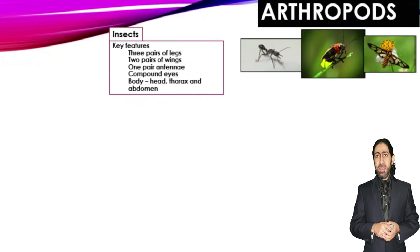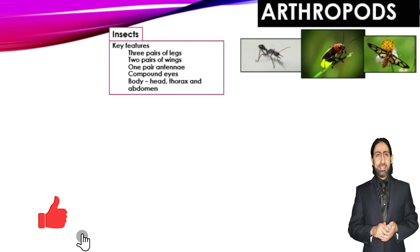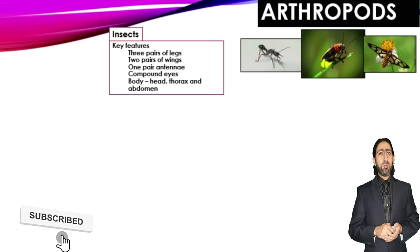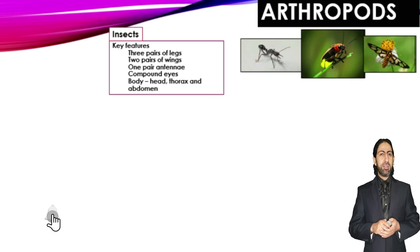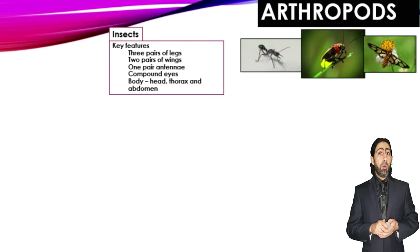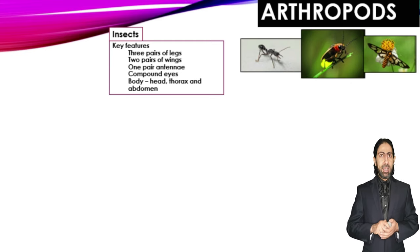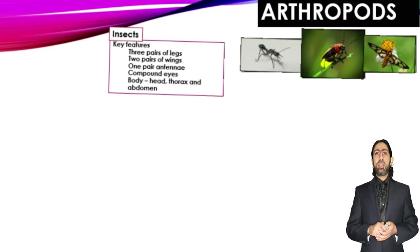Now for the main features of arthropod subgroups. Regarding insects, the main features are three segmented body parts, three pairs of legs, two pairs of wings, one pair of antennae, one pair of compound eyes, and a body divided into three regions: head, thorax, and abdomen.